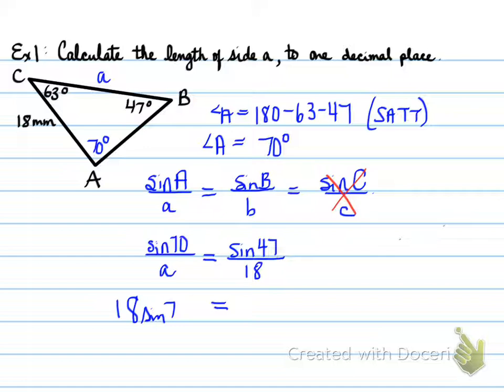When you cross multiply, you get 18 sine 70 on the left side, and on the other side, A times sine 47. We need to get A by itself, so we're going to take sine 47 and divide it to the other side. We're dividing by sine 47, and that's how we solve for A.